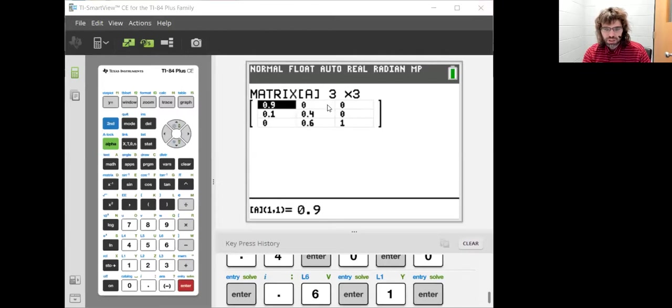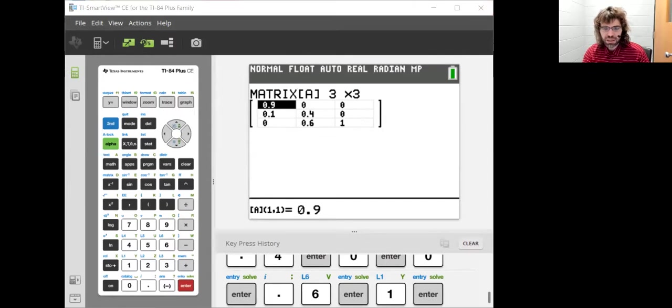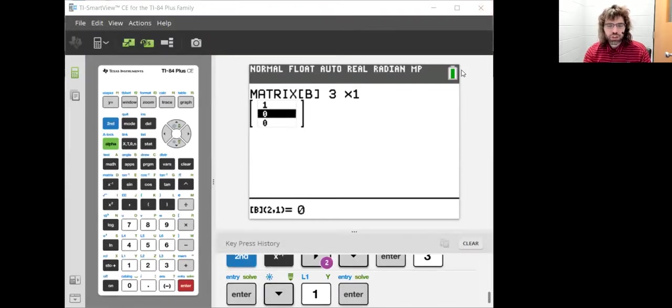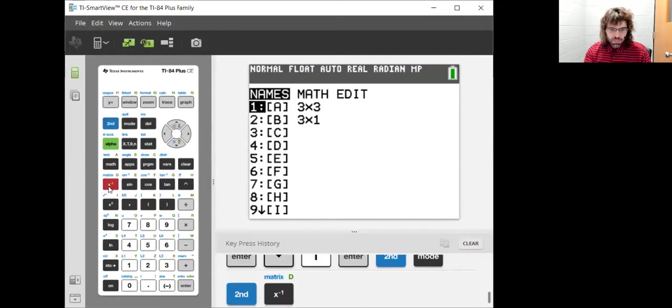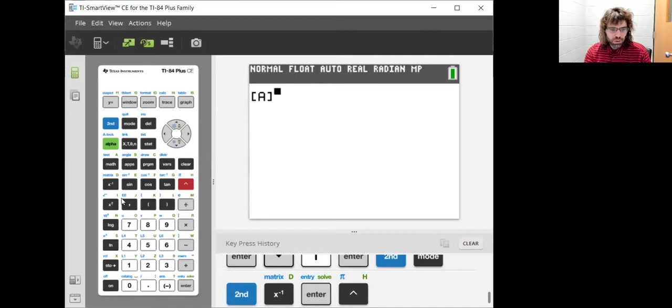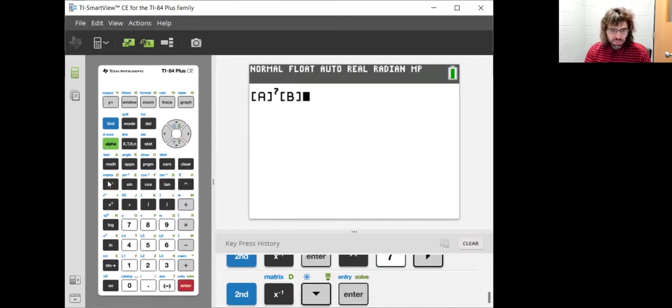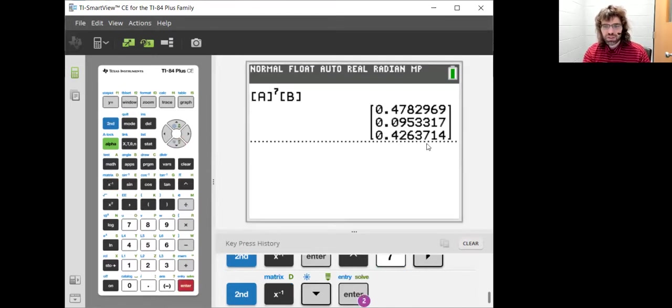We will enter this transition matrix into our calculator as A and the initial probability vector as B. A to the power of seven times B gives us this probability vector. So the probability that we are still in S is 0.4782969.